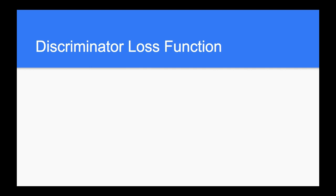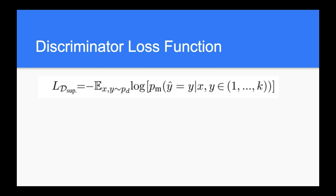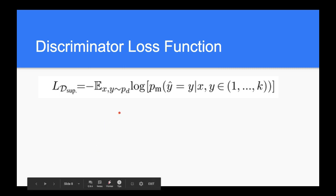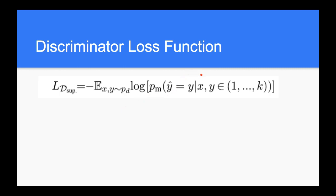Let's take a closer look at the discriminator loss function. There are two different parts. The first part is the supervised term, which calculates the penalty for classifying real labeled examples. If this example is real, you need to correctly classify it to its corresponding class. You want to maximize the log probability of giving the condition X to get the corresponding class, where the class can be 1 through K. You need to classify the real example correctly.